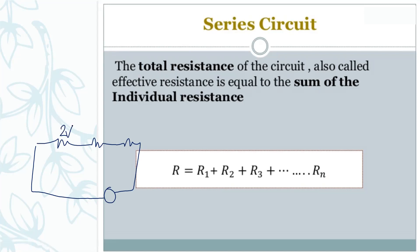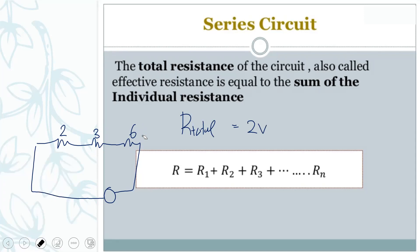For example, if you have resistances of two ohms, three ohms, and six ohms, and you want to find R total, you add: two ohm plus three ohm plus six ohm equals eleven ohms. So the total effective resistance of the circuit will be eleven ohms.